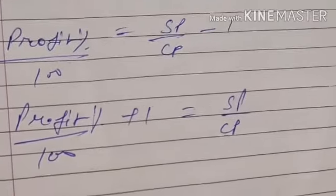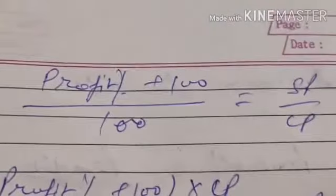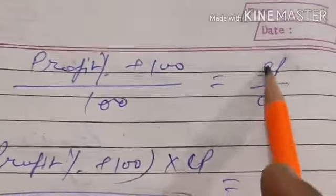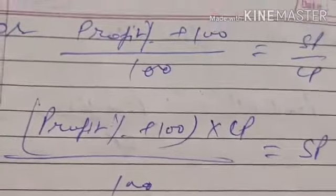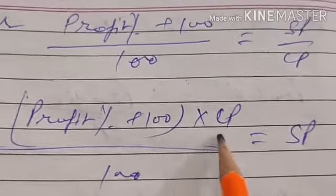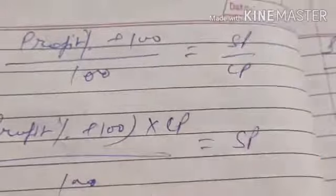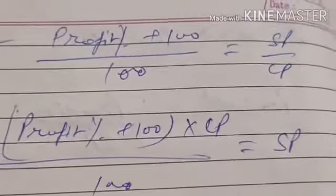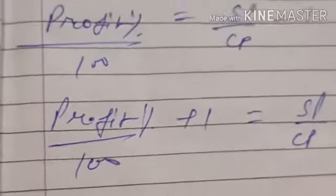So we get: SP upon CP is equal to 1 plus profit percent upon 100. That is the ratio of SP upon CP. Or in another way you can write it as: profit percentage plus 100, upon 100, is equal to SP upon CP. From this you can find SP or CP as needed.